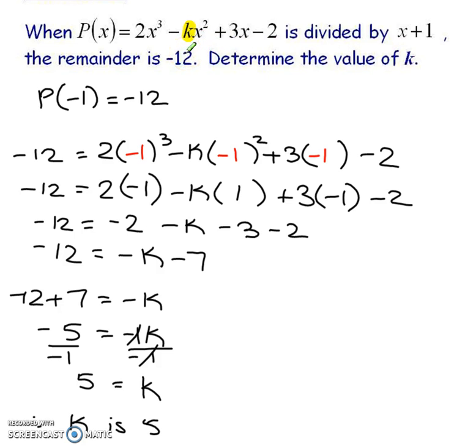If your remainder is negative 12 that means once I sub in the negative 1 wherever there's an x I'm going to get negative 12. So P of negative 1 equals to negative 12. Why don't I put that negative 12 right here because that's where the P of negative 1 would normally go. And then what we're going to do is write down the equation but everywhere we see an x we're going to put a negative 1 instead. Now there only is that k that's left as a variable and we can solve for it.